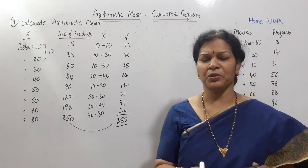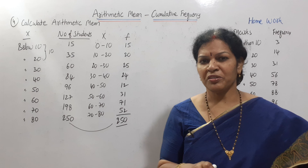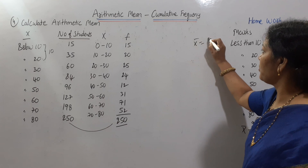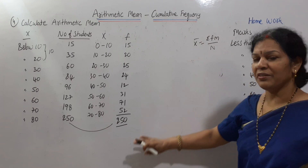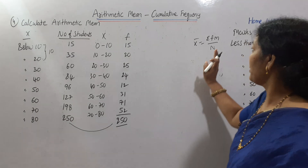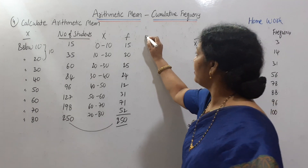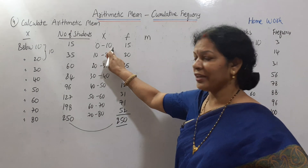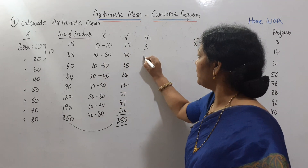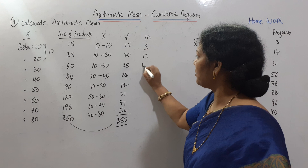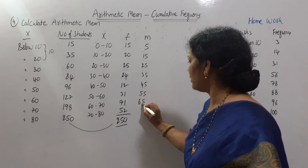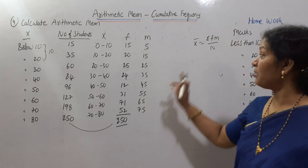The problem is normal. What is the formula? X̄ equals sigma fm divided by n. This formula is straightforward. The mid values are calculated as: 10 divided by 2 equals 5; 30 divided by 2 equals 15; then 25, 35, 45, 55, 65, and 75. This is the mid value.